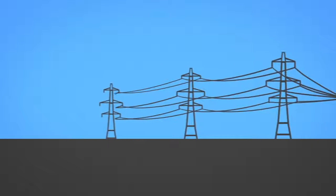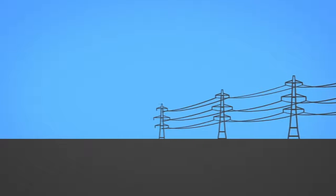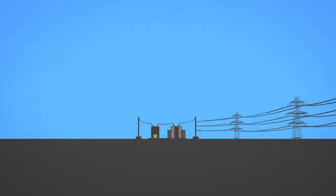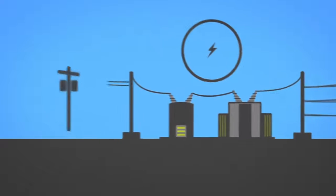The electricity then travels along transmission lines, either overhead or underground. Once it reaches its destination, another substation steps the voltage down to a level suitable for distribution lines that deliver electricity to consumers.